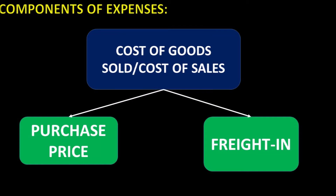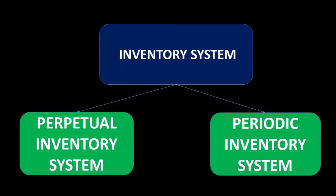For trading operations, the cost of sales collects the cost of the merchandise sold. This includes the purchase price of inventory, brokerage, and shipment cost to bring the goods to the premises of the company — the shipment cost is called freight-in. Cost of Sales or COGS is part of inventory accounting, and accountants have two ways of keeping records of inventory: the perpetual and the periodic inventory system.